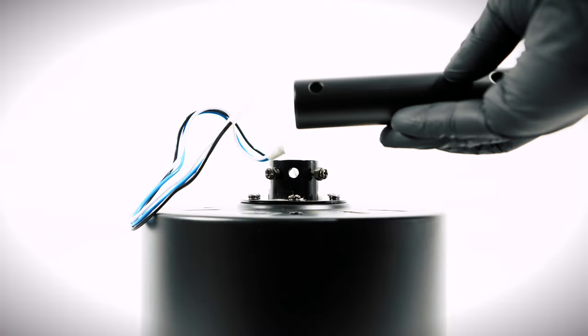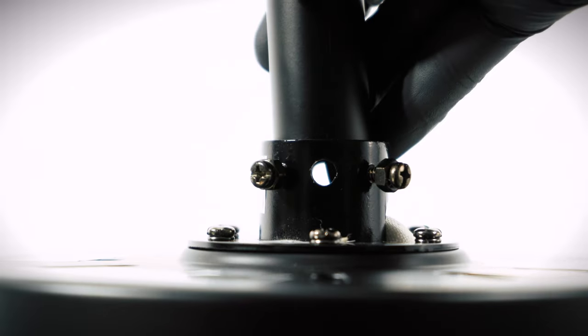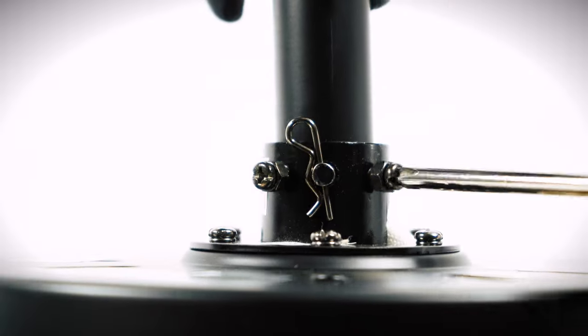Slide the wires through the downrod and insert it into the collar. Align the holes, then insert the clevis pin and cotter pin. Tighten the two collar set screws.